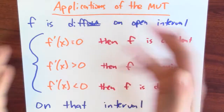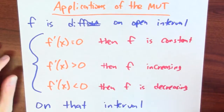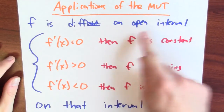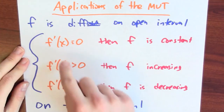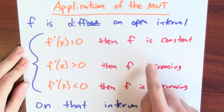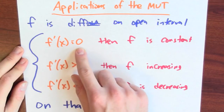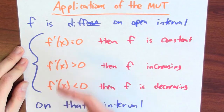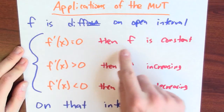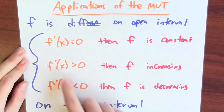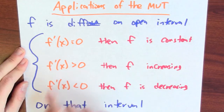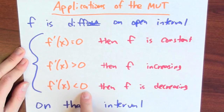Let's summarize what we've learned. Here are some applications of the mean value theorem. If F is differentiable on some open interval, then depending on the derivative: if the derivative is identically zero, F is constant on that interval; if the derivative is positive no matter what I plug in, then F is increasing on that interval; and if the derivative is negative, then F is decreasing on that interval.